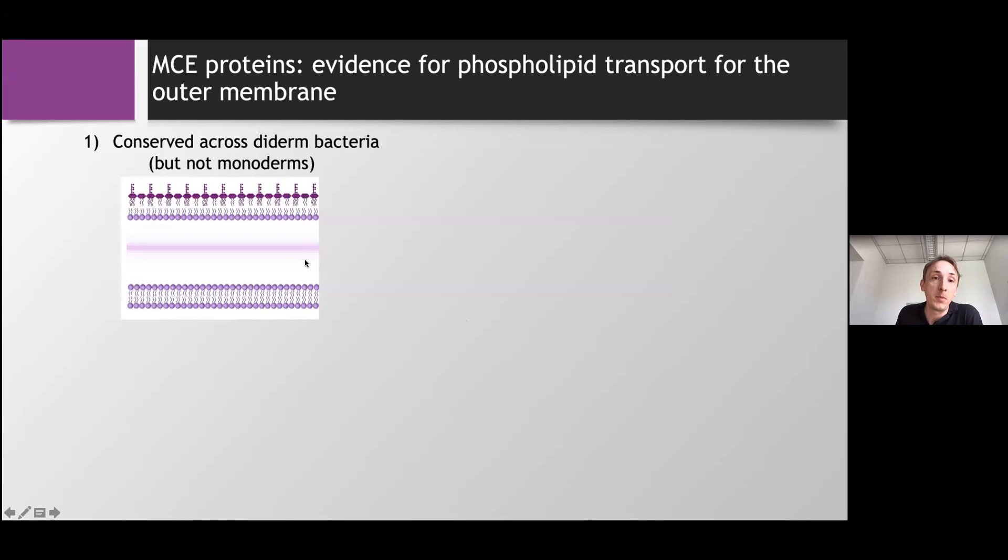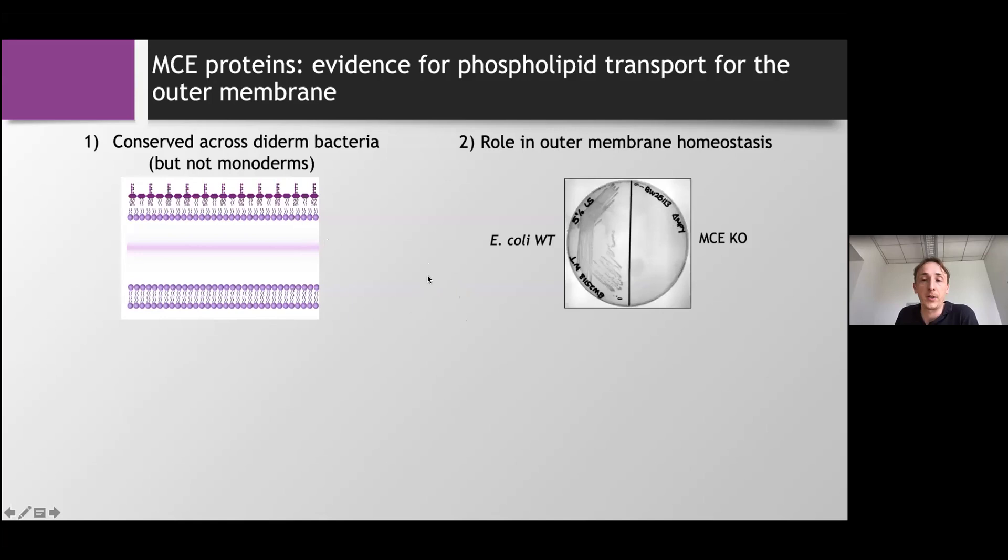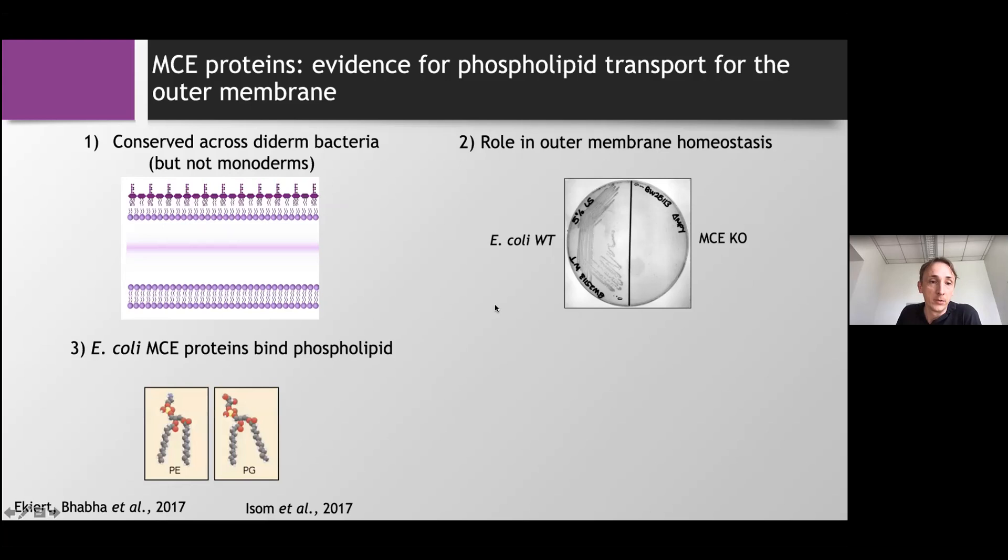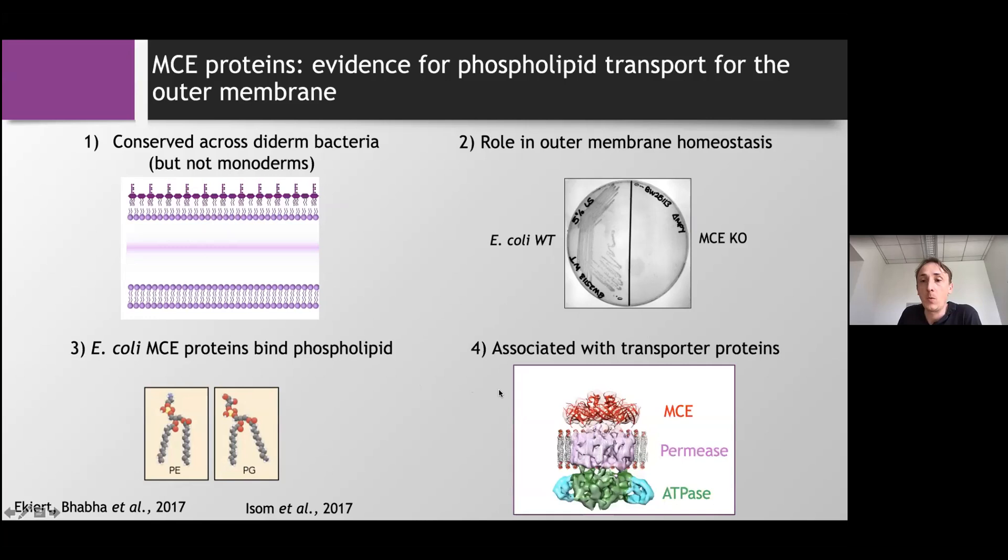So there has been a family called the MCE family protein that a few years ago has emerged as potential candidates for lipid transporter in those kind of bacteria. And what are the evidences that those kind of proteins could be those that we are interested in for the lipid transport? So first, they're extremely well conserved across double membrane bacteria but cannot be found in the monoderm ones, meaning that they must have some kind of role in this second outer membrane. The second, it's a growth assay of bacteria on LB agar which was done with detergent and it's a test which is usually used to test the sensitivity and highlight potential defects in the membrane of the bacteria. And when it's done with this MCE knockout, you can see that there is indeed a growth effect highlighting a potential impact on the outer membrane when MCE is absent. The third evidence is that some TLC and mass spectrometry analysis have shown that MCE proteins do bind phospholipids. And finally, when we look at the operon, we see that the MCE proteins are associated with transporter proteins.